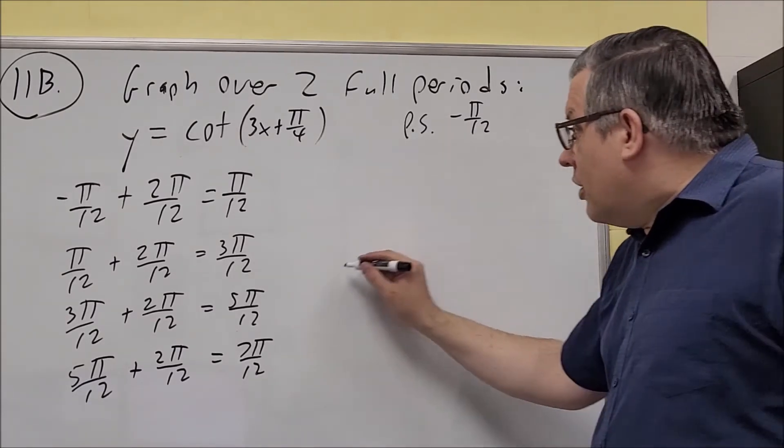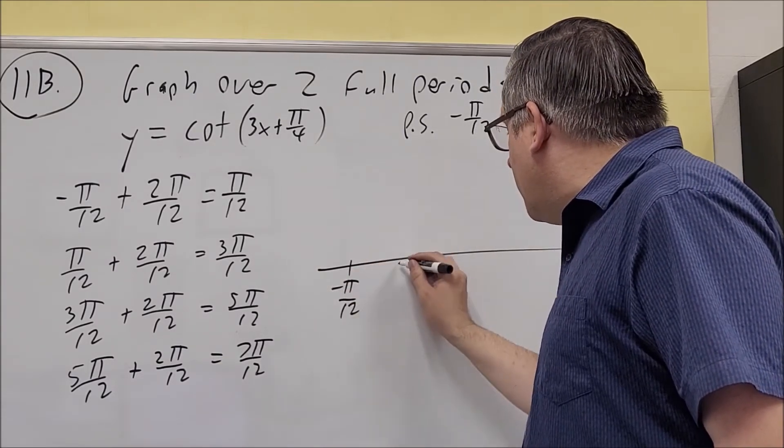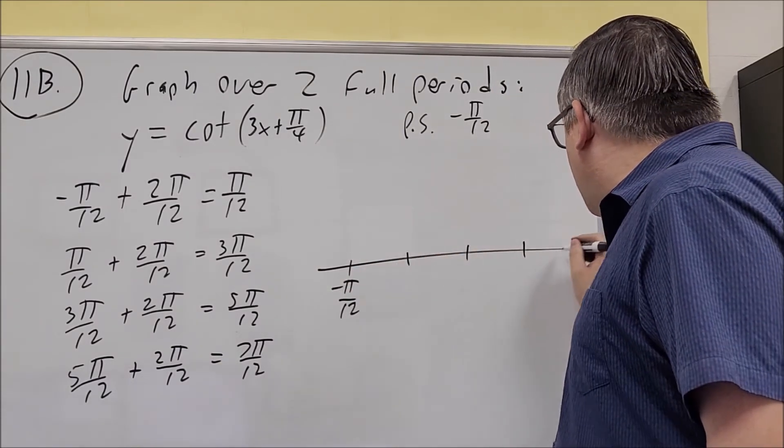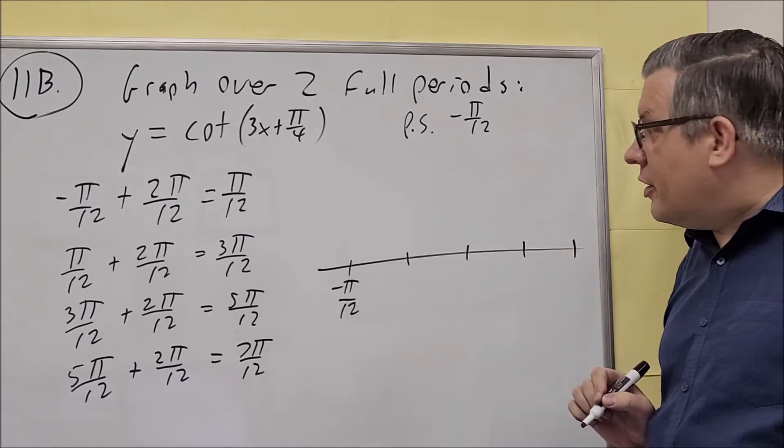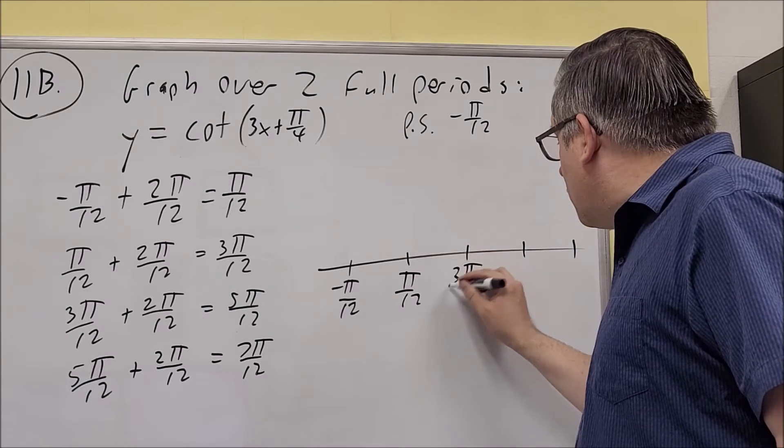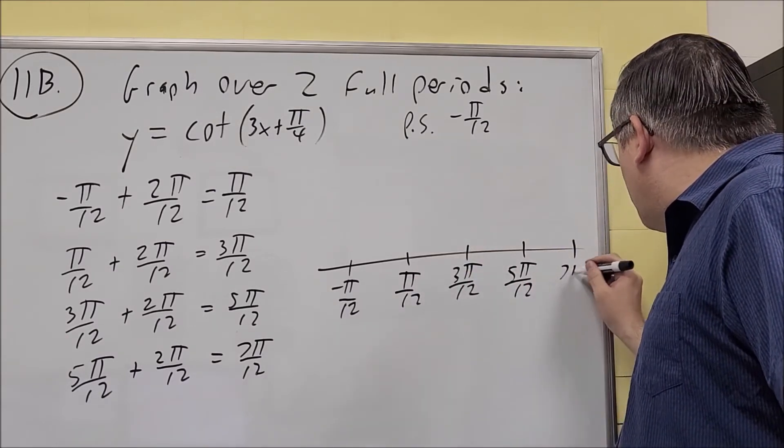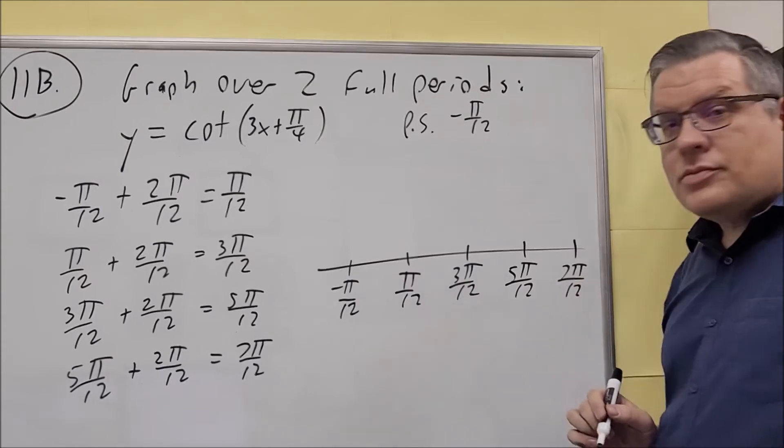We're going to put them down now on the graph. Negative π over 12 is here, and then we're going to just put the other ones on here. Positive π over 12, 3π over 12, 5π over 12, and 7π over 12. So we have all those.